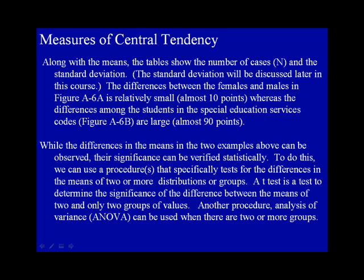While the differences in the means in the two examples above can be observed, their significance can be verified statistically. To do this, we can use a procedure that specifically tests for the differences in the means of two or more distributions or groups. A t-test is a test to determine the significance of the difference between the means of two and only two groups of values. Another procedure, analysis of variance, also known as ANOVA, can be used where there are two or more groups.